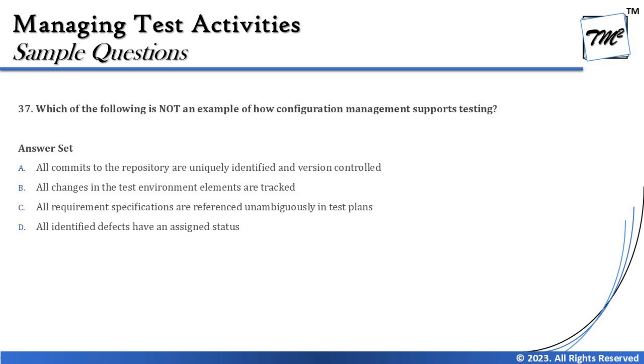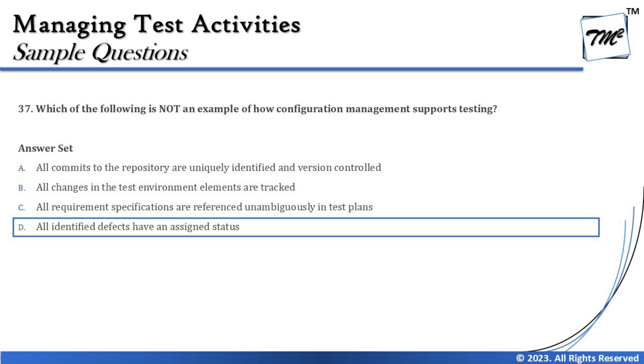Giving a status to a defect is not a concern of configuration management. So the right answer for this question is D — all identified defects have an assigned status is NOT an example of how configuration management supports testing. The other three options do talk about how configuration management supports testing.